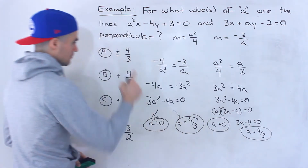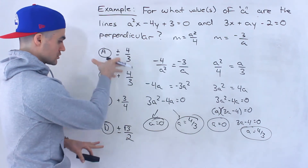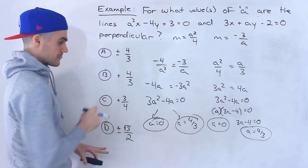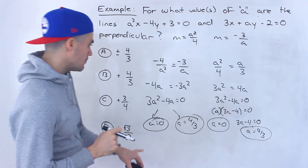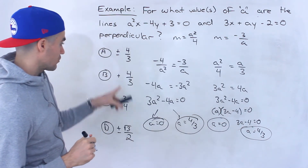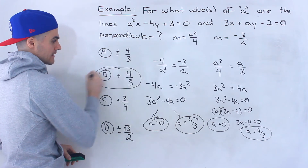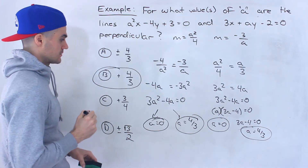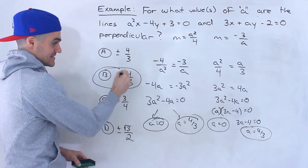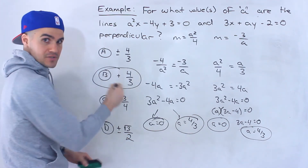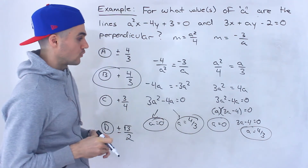Looking at our multiple choice solutions, none of them list A equals 0, but one does have positive 4 over 3, and that is the answer. If the option included 0, it could also be listed as 0 or 4 over 3.